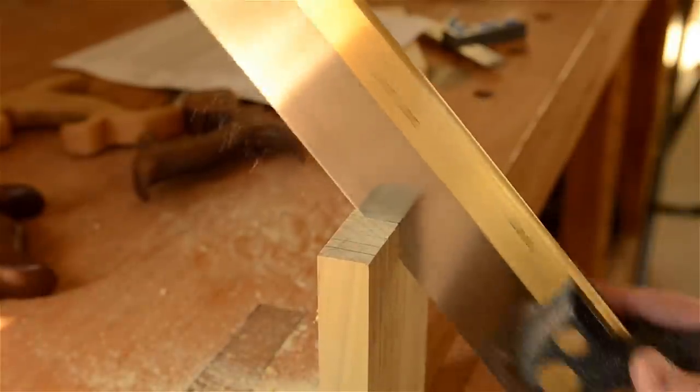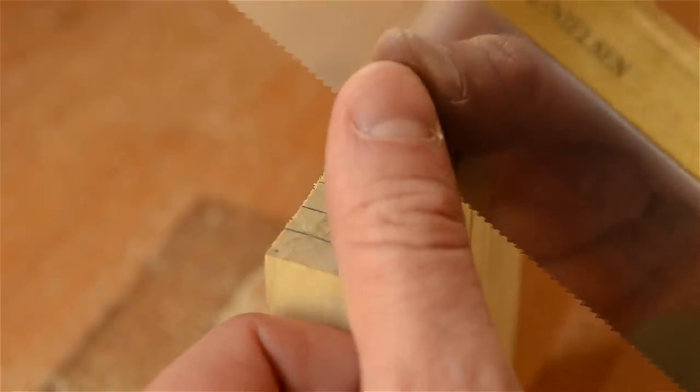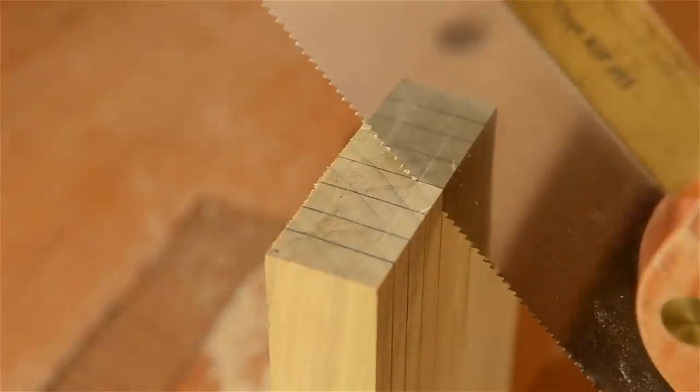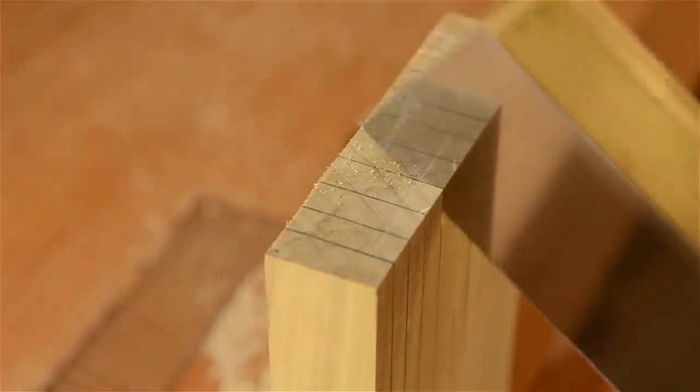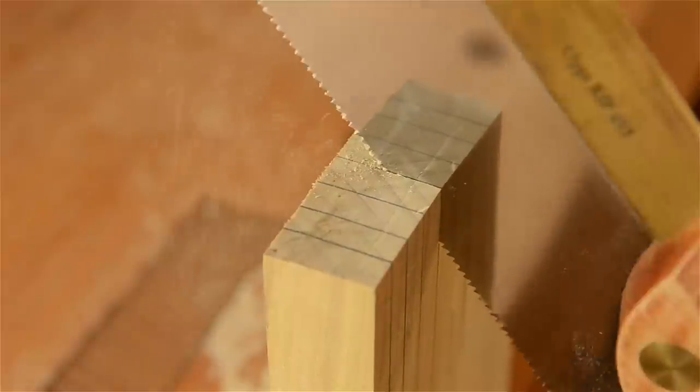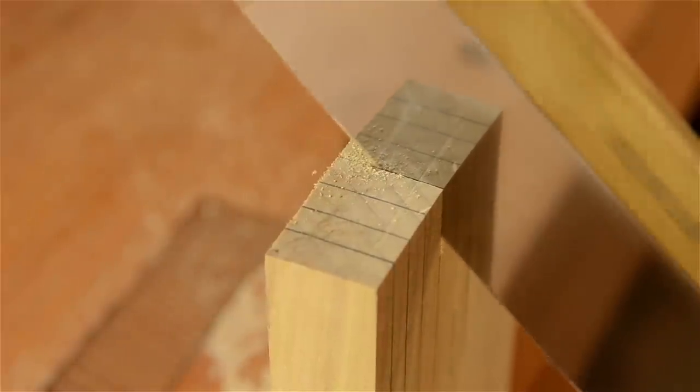When you become more experienced rather than dragging backward you can put a bit of upward lift on the saw and push the saw forward to break the aris delicately. But I've seen some really experienced woodworkers who still pull backward to break the aris. So just do what's comfortable to you.